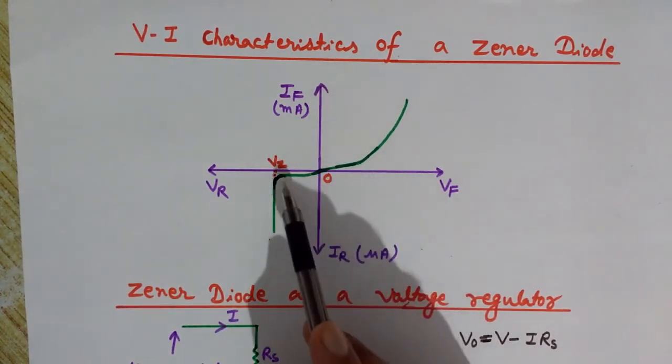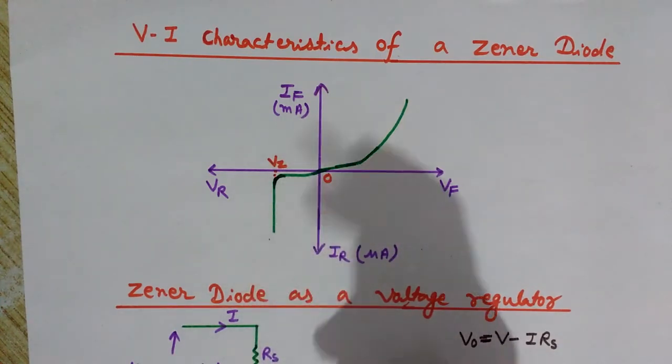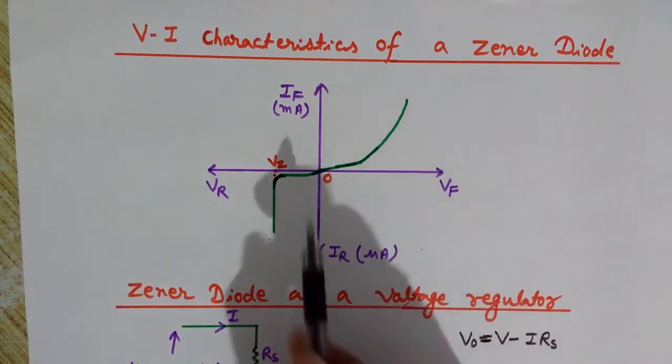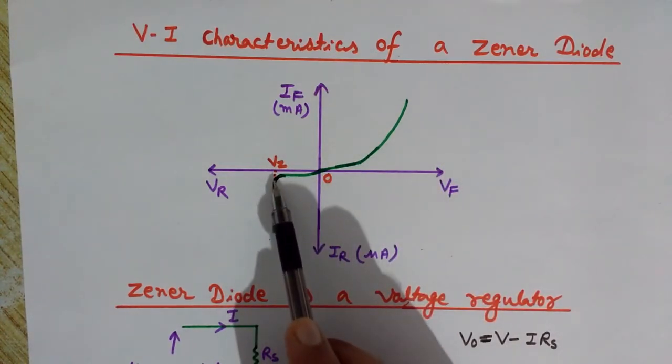Because if we use it in a circuit, then the current varies - it increases to higher current - but it will not let the voltage increase and it will be constant at the Vz, the breakdown voltage of the Zener.